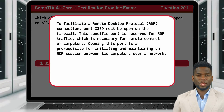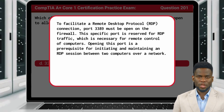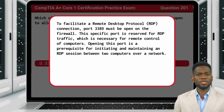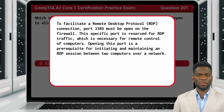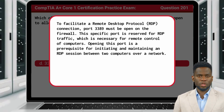To facilitate a Remote Desktop Protocol, or RDP connection, port 3389 must be open on the firewall. This specific port is reserved for RDP traffic, which is necessary for remote control of computers. Opening this port is a prerequisite for initiating and maintaining an RDP session between two computers over a network.